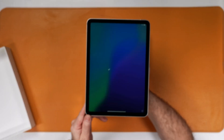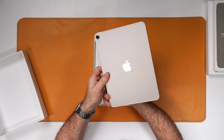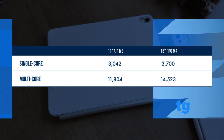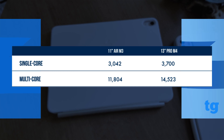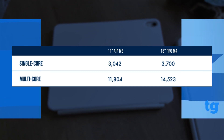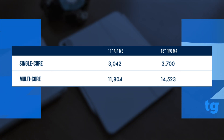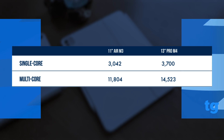The new iPad Air's main upgrade is the Apple M3 chip, which features an 8-core CPU, a 9-core GPU, and a 16-core Neural Engine. It scored 3,042 and 11,804 in single and multi-core Geekbench testing, respectively. For gaming, M3 features like hardware-accelerated mesh shading, ray tracing, and dynamic caching help big titles like Resident Evil 4 look phenomenal.